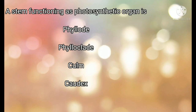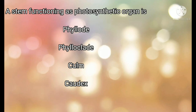The next question is: the stem functioning as a photosynthetic organ is? The four options are: phyloid, phyloclade, colm, and codex. Phyloid means the leaf-like modification — actually the petiole is modified like a leaf and does the process of photosynthesis. Phyloclade means the stem which performs photosynthesis.